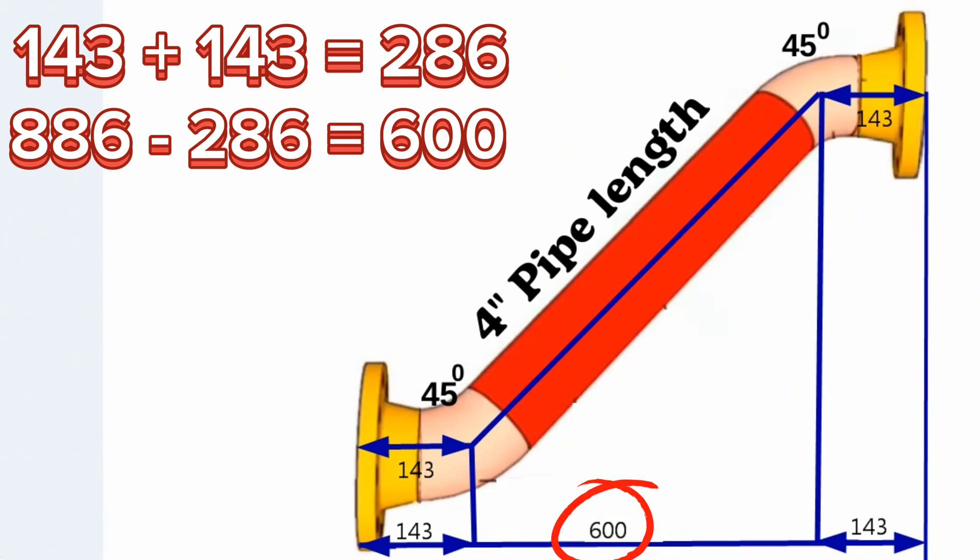These 600 millimeters is the distance from the 45-degree elbow center to the another 45-degree elbow center on horizontal position.